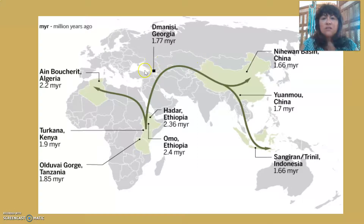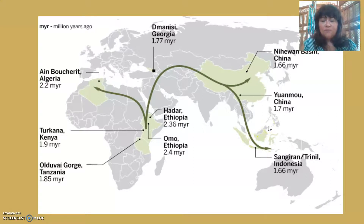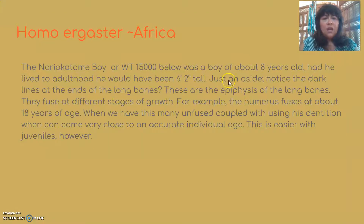From Africa, they move into eastern Georgia — the Dmanisi specimens — then into different parts of China, and all the way into Indonesia. These islands represent something specific going on, which I'll talk about shortly.